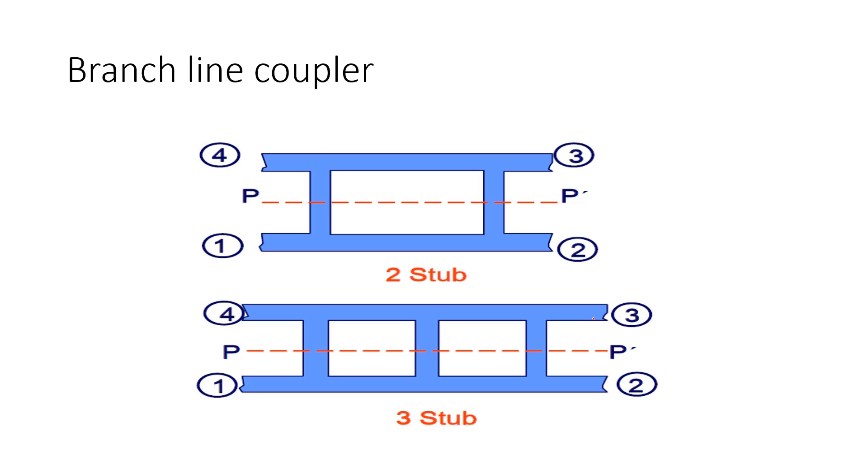A branch line coupler could be of many forms. This is a branch line coupler, and this is also a branch line coupler. The difference between these two is it is of two-stub, it is of three-stub. In three-stub, we can increase the bandwidth of our BLC.